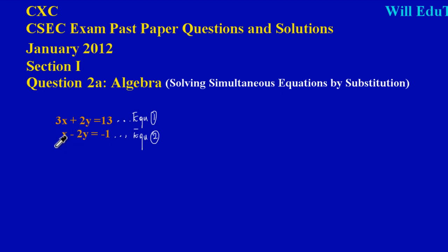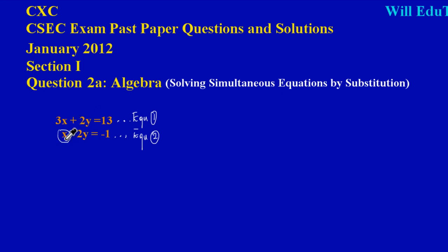When solving a pair of simultaneous equations by substitution, the first thing you want to do is make a variable the subject — that is, make the variable equal to some expression. I'm going to manipulate equation number two, because when I look at it I see x standing by itself. When a letter stands by itself it's much easier to make it the subject than a letter that has a coefficient in front of it. The coefficient is the number before the variable — for example, the coefficient of x in equation one is three, the coefficient of y in equation one is two, and the coefficient of y in equation two is negative two.